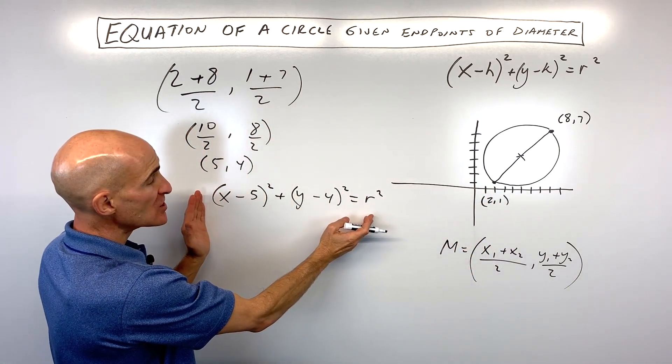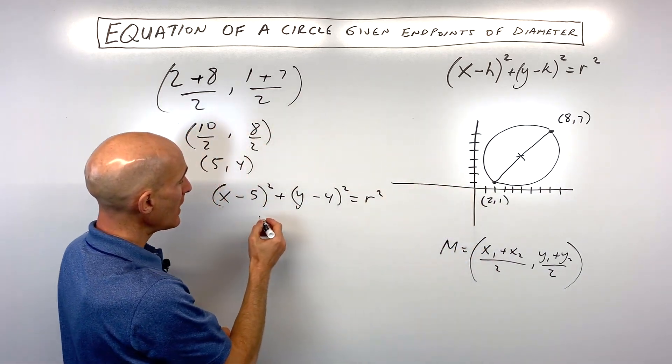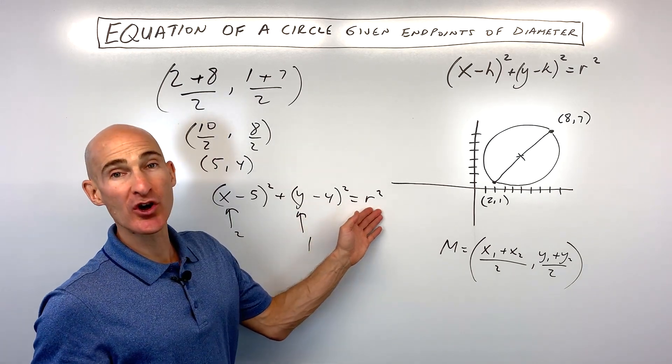which is just to take this equation as we have it in this form now and just pick one of the endpoints, that's a point on our circle, and put it in for X and Y. And what we'll do is we'll solve for R squared.